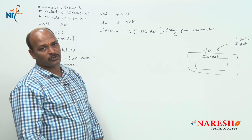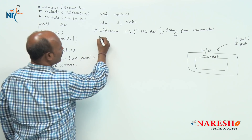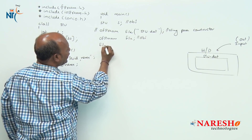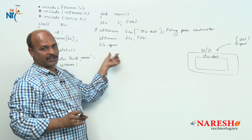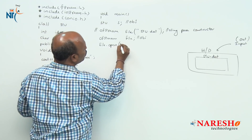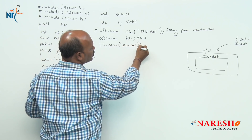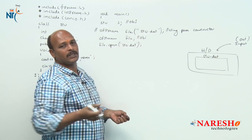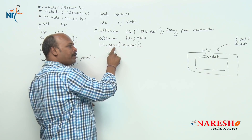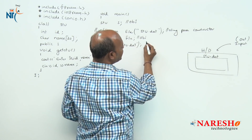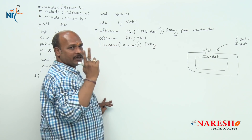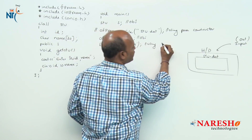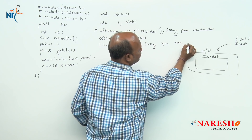The second method: declare ofstream file as the object, then call file.open("stu.dat"). You can optionally add ios::out as the opening mode — with or without it the meaning is the same. By using the open() member function we open the file. So we can open data files in two ways: by using a parameterized constructor, or by using the open() member function.